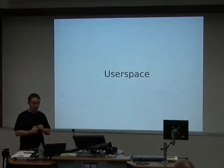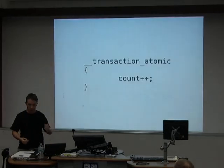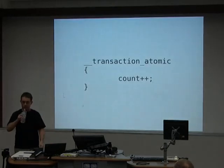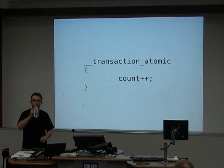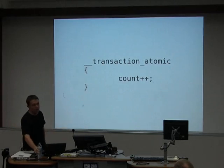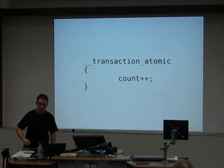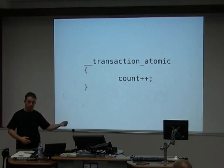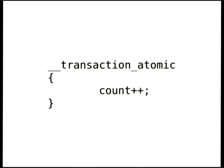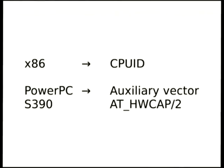Outside of the kernel, in user space you can just use the atomic keyword in GCC, which will eventually fall back to hardware transactional memory when supported on different platforms, and in the meantime uses software transactional memory. If you want to know if your hardware actually supports it: on x86 use CPUID, on PowerPC and S390 use the hardware capability field in the auxiliary vector.